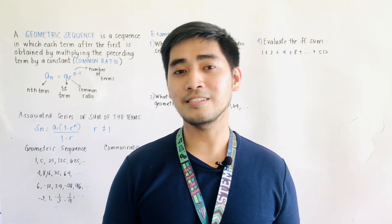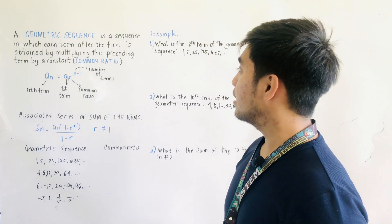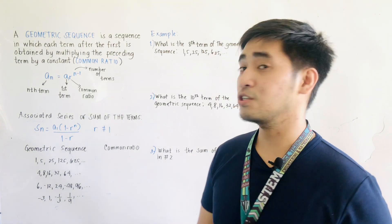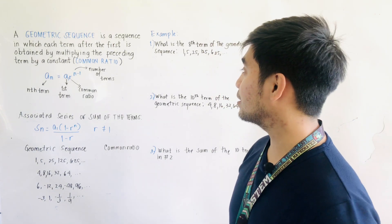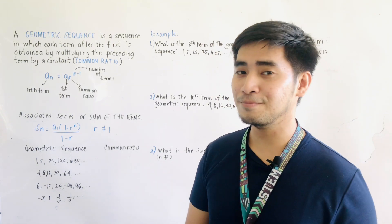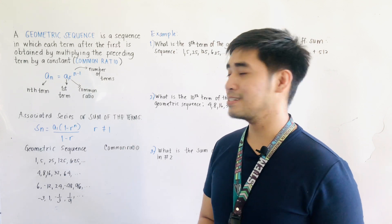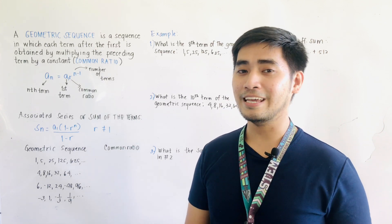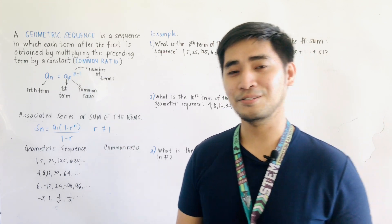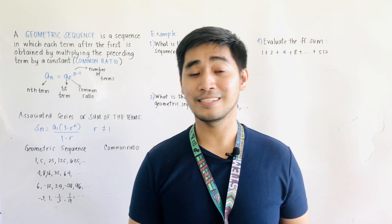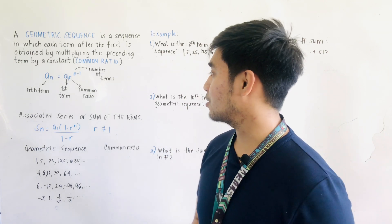When we say geometric sequence, we have a sequence in which each term after the first is obtained by multiplying the preceding term by a constant. And that constant is what we call the common ratio.